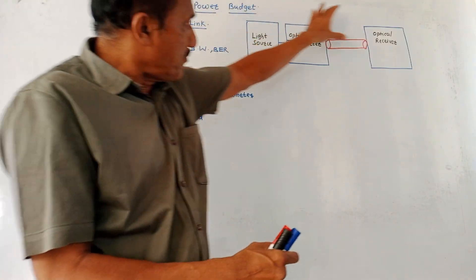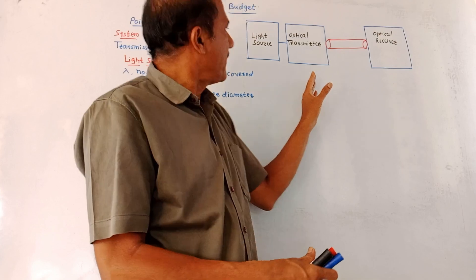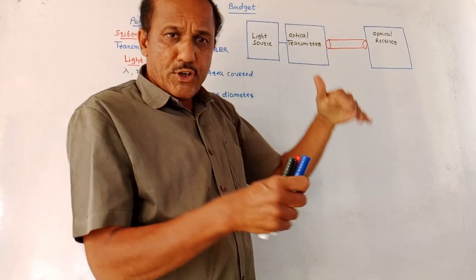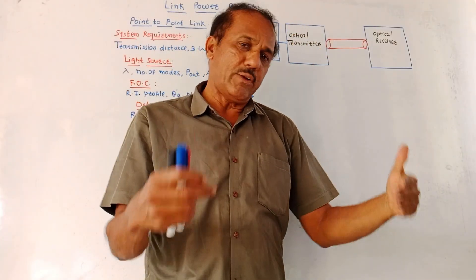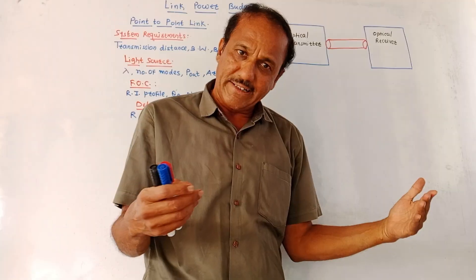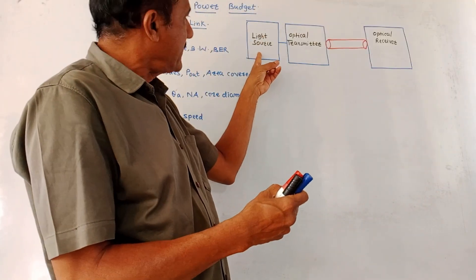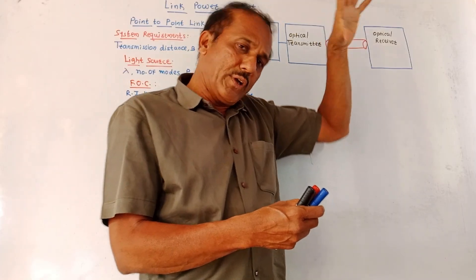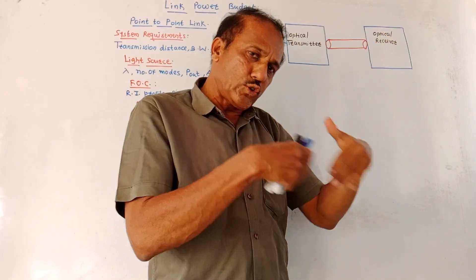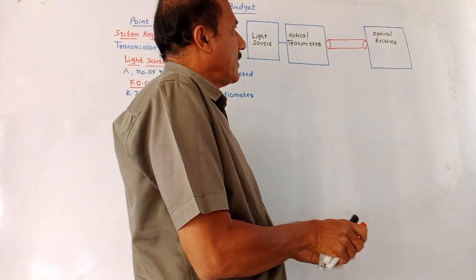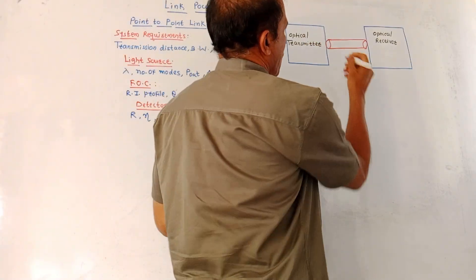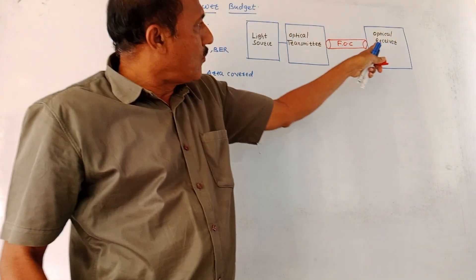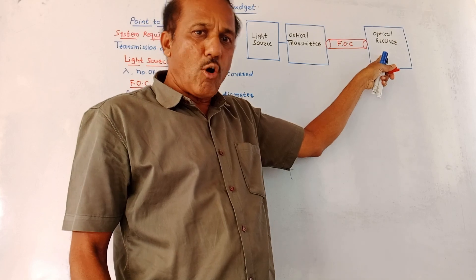The first part is the point-to-point link. This is the simple diagram of a point-to-point link. At the input side we are using one light source — through the fiber optic cable we transmit signals in the form of light rays. A suitable light source is used at the input side, then one optical transmitter converts the light source into a suitable format. These light rays are transmitted through the fiber optic cable (FOC), and at the output we use a suitable optical detector.